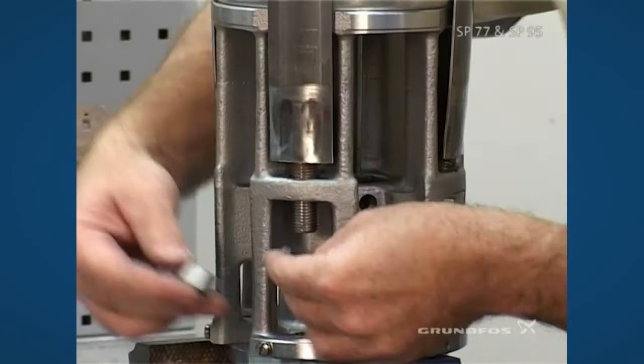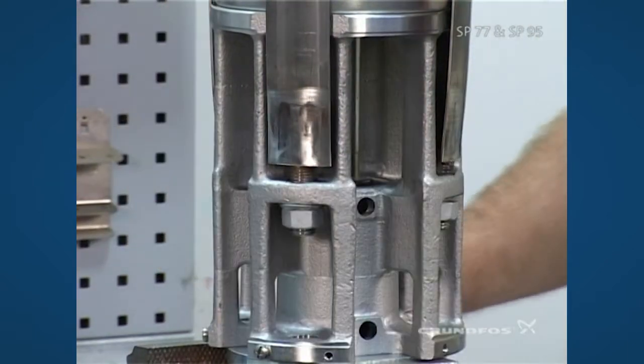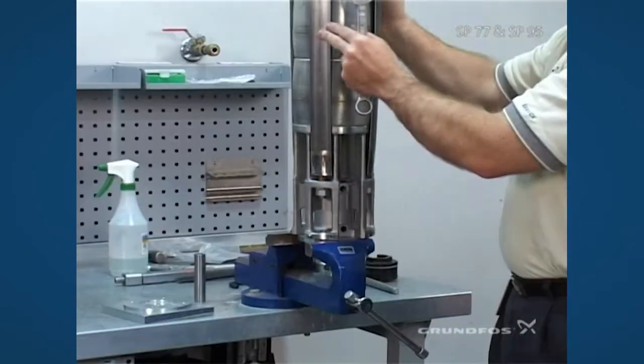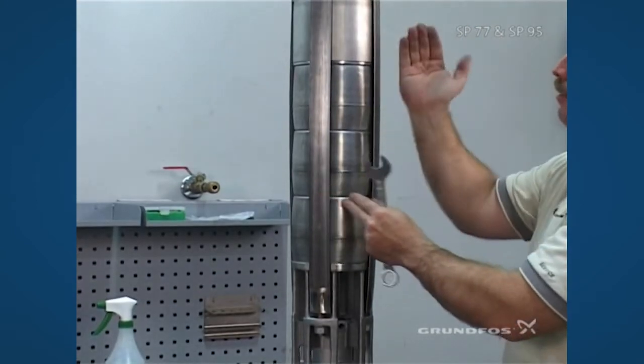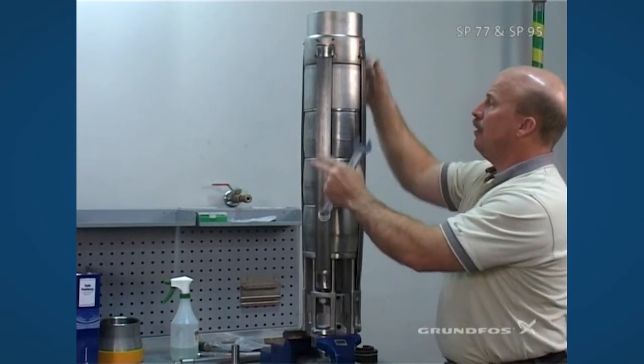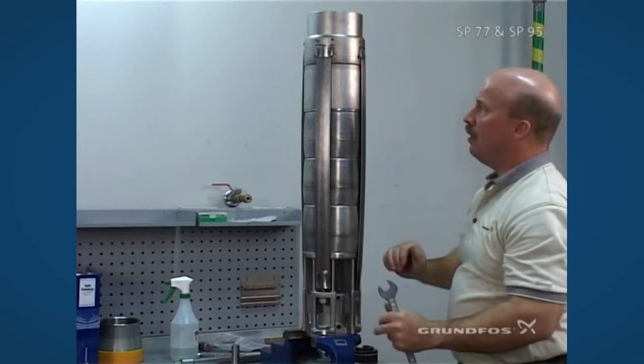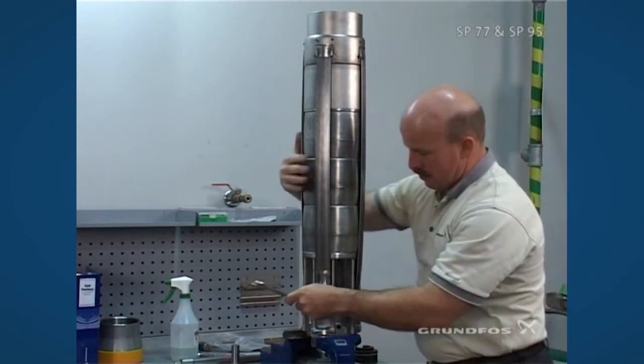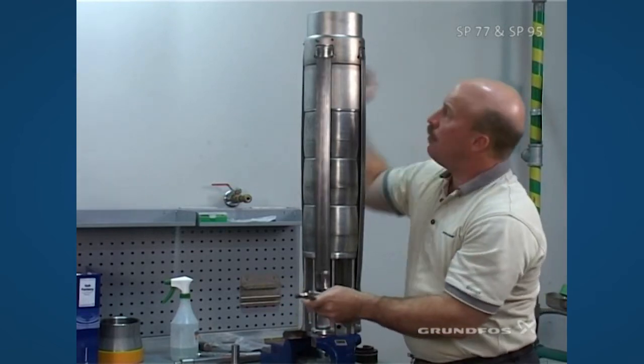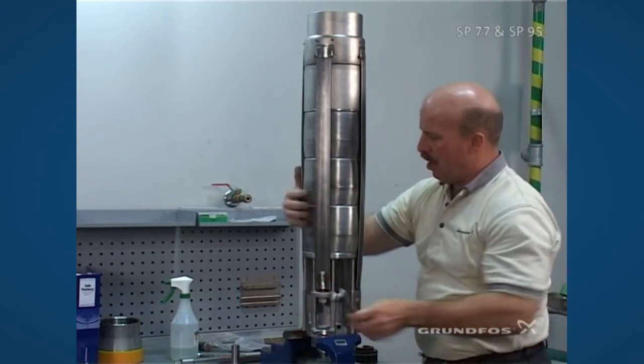Take a 22-millimeter wrench, and just like we have learned on the earlier models, we'll be tightening diagonally from one side to the other, just like you would do a tire when you're changing a tire in a car. On the longer units, it's important to make sure that the straps are as straight up and down as possible on the assembly before you begin to tighten. Also on the longer assemblies, you want to ensure that it does not come out of the little notch area on the discharge piece.